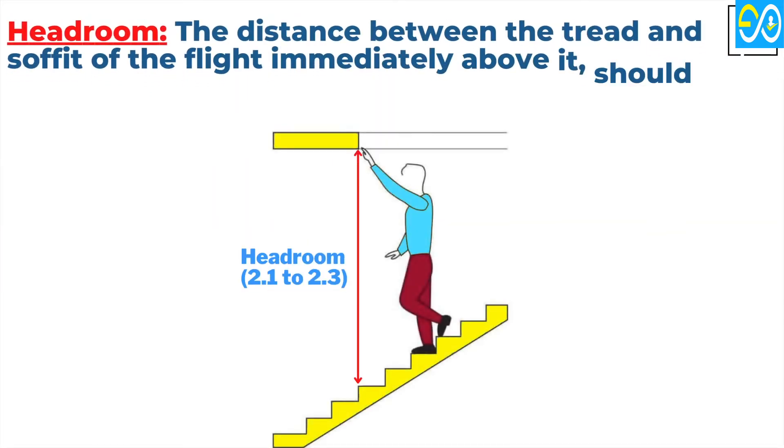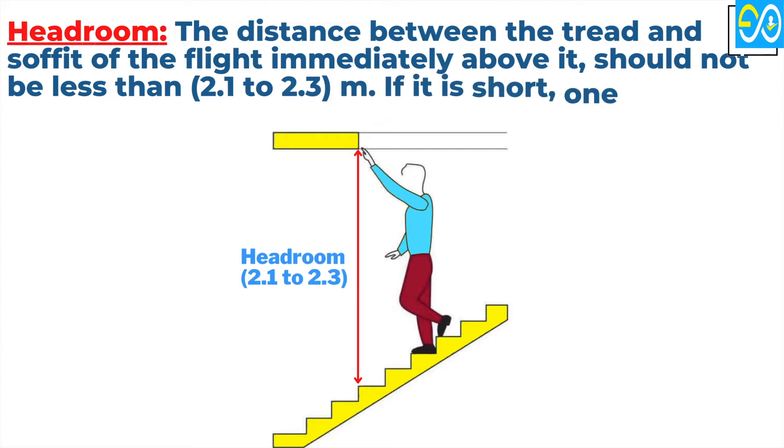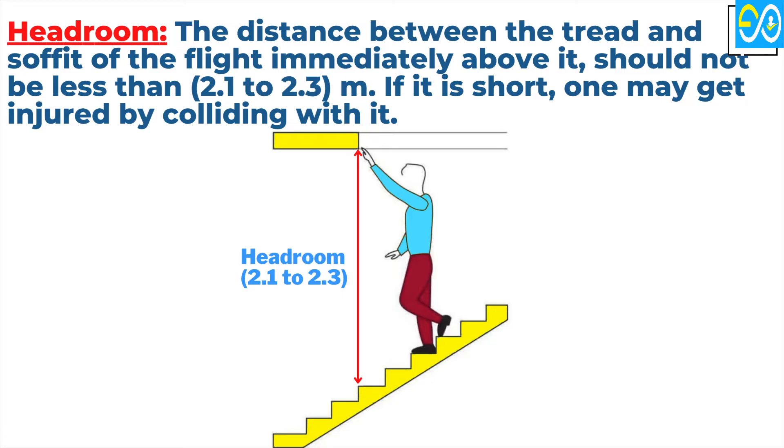Number eight, headroom. The distance between the tread and soffit of the flight immediately above it should not be less than 2.1 to 2.3 meters. If it is short, one may get injured by colliding with it.